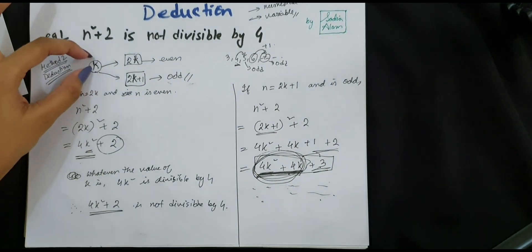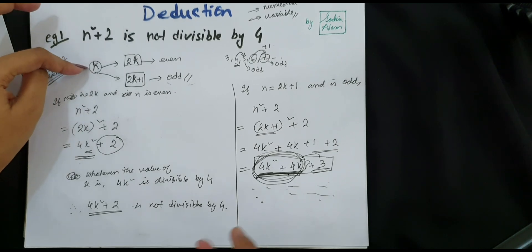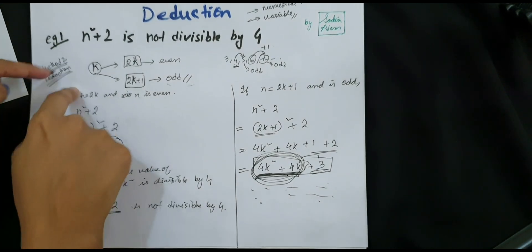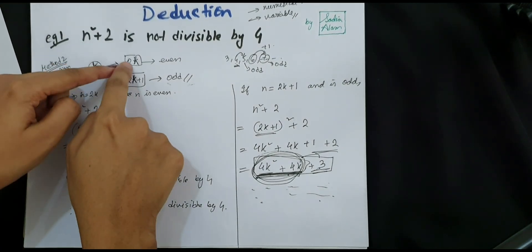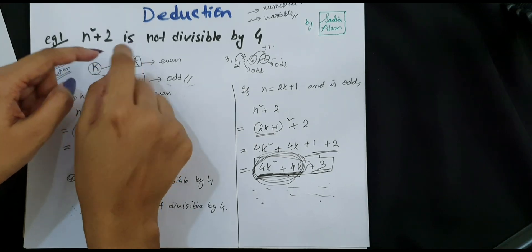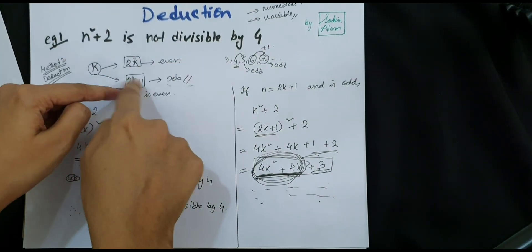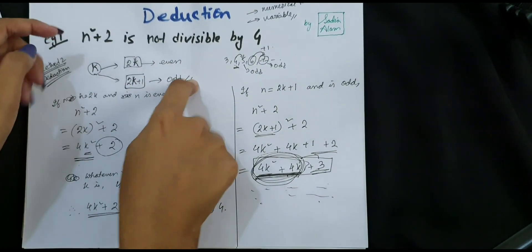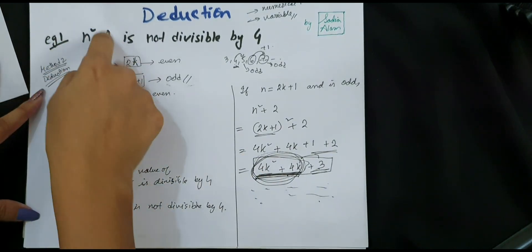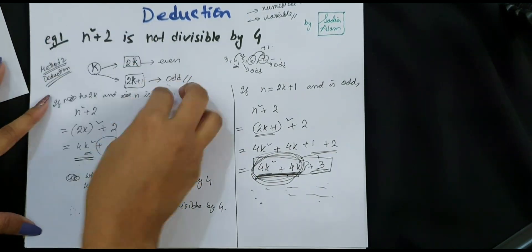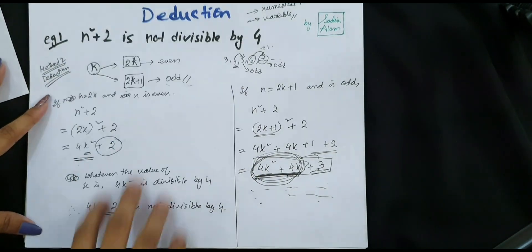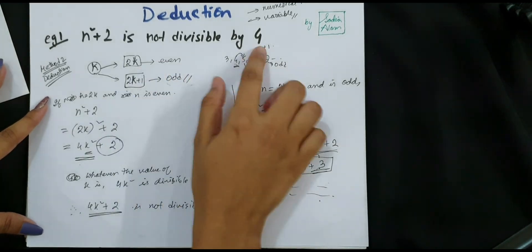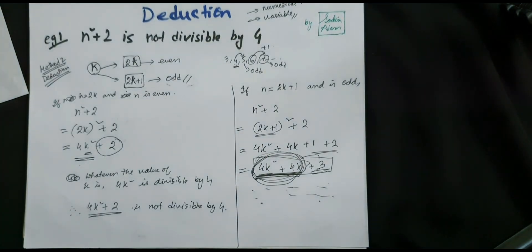In case of deduction, always take a variable — you cannot take k directly since it can be odd or even. Always multiply by 2 so it becomes even, then add 1 so it becomes odd. Then substitute your variables into the equation, simplify, and analyze the final result to explain whatever has been asked.